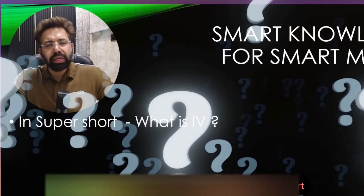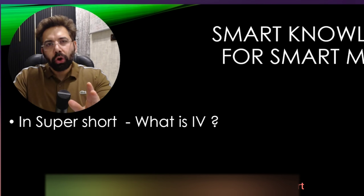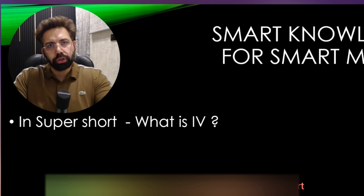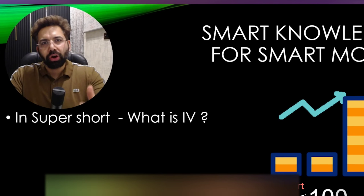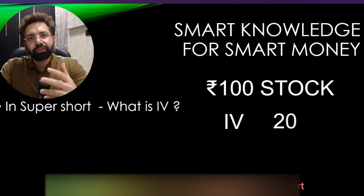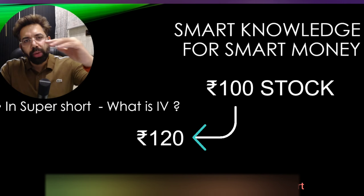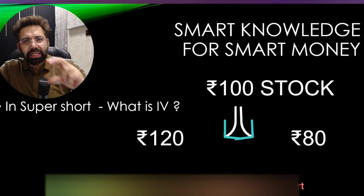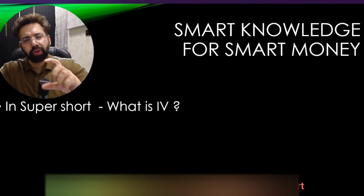What is IV? IV is implied volatility. Implied volatility is the guess of the market — where the market or the stock is expected to go in the future. It will not tell you the direction. It will tell you the expected move. For example, if the stock is trading at 100 rupees with an implied volatility of 20%, the stock is expected to go to 120 or 80. That is the real meaning of implied volatility.